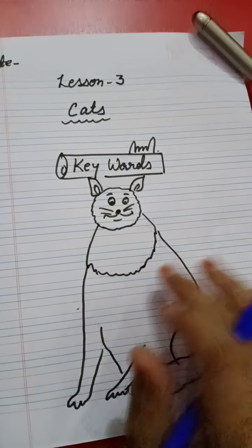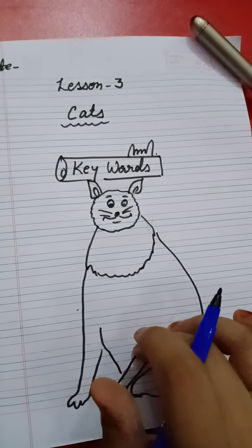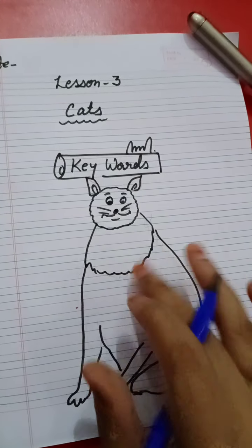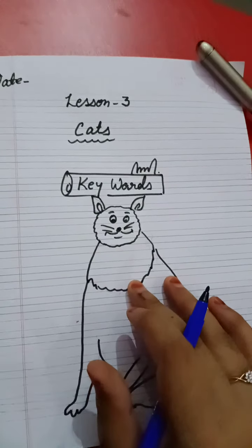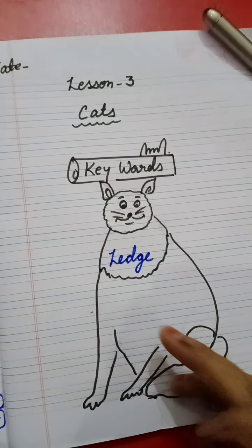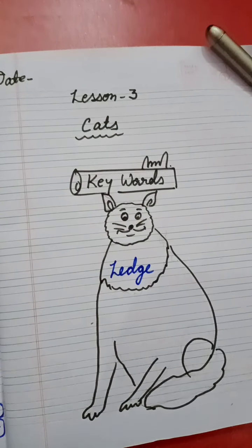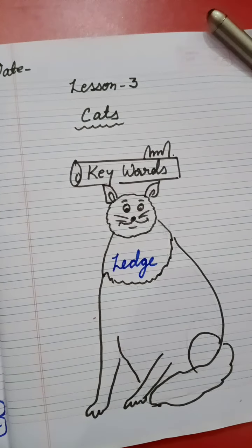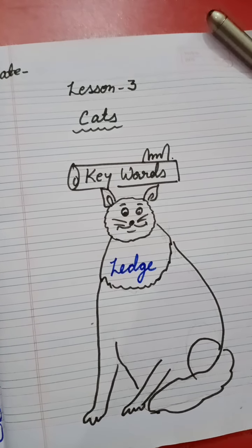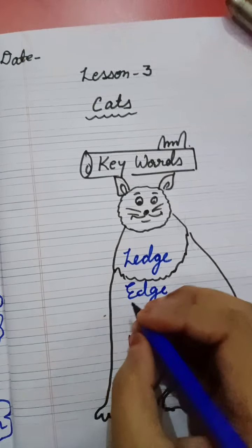In the keywords section, write some hard words. First is 'ledge' — ledge means shelf. Next is 'edge' — edge means border. Then 'drawer.'